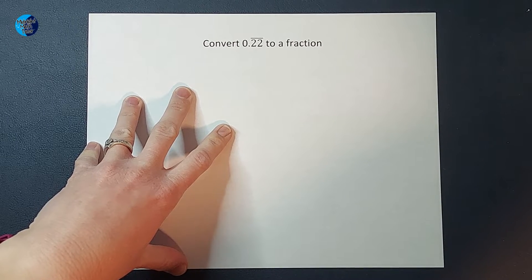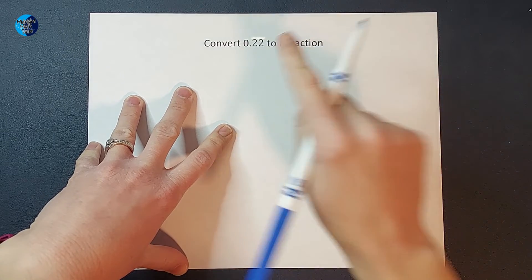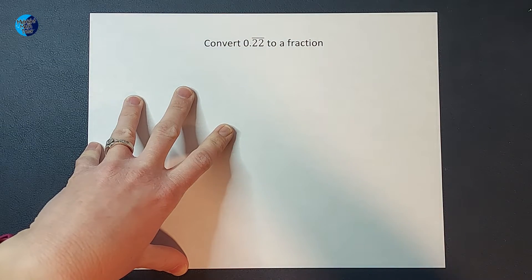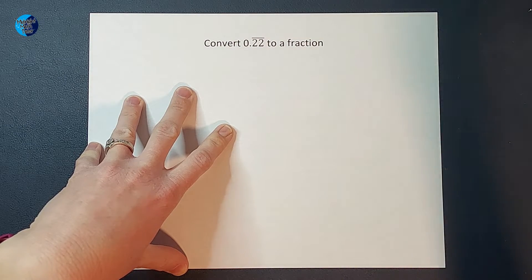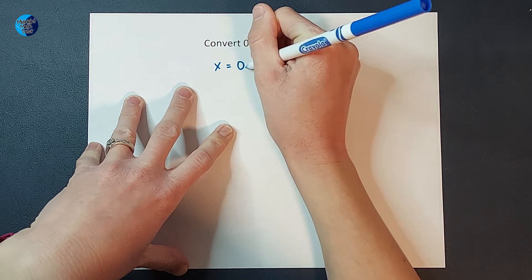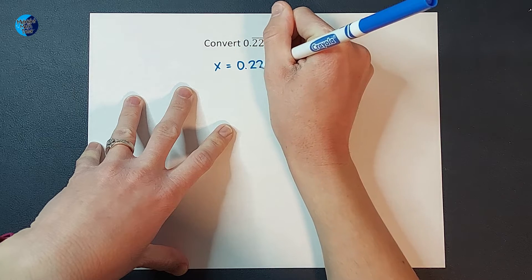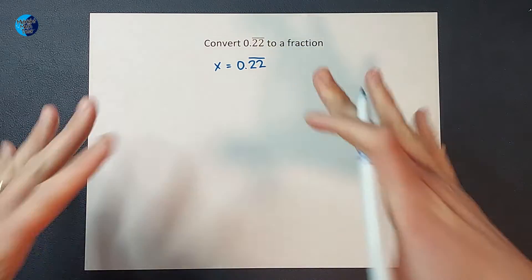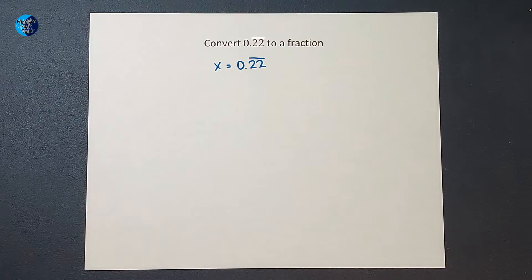All right, so the first thing we're going to do is we are going to set our repeating decimal equal to a variable. So I'm just going to say x equals 0.22 repeating. That is totally legal, right? I can just say in this scenario x is equal to that.